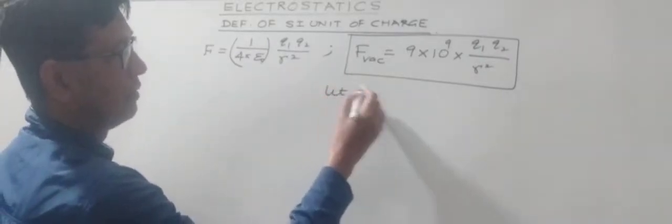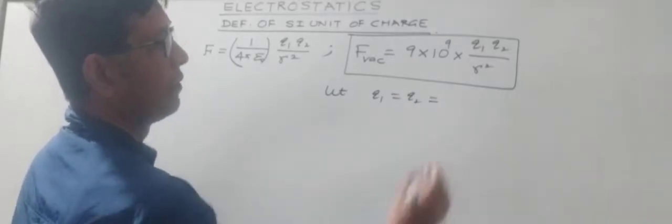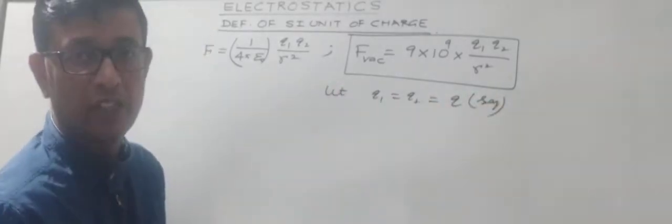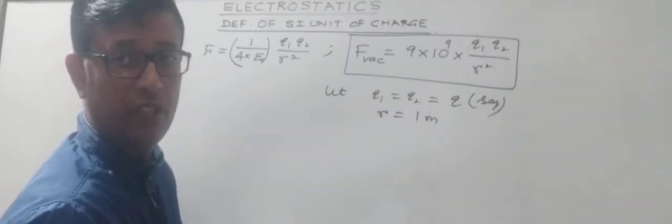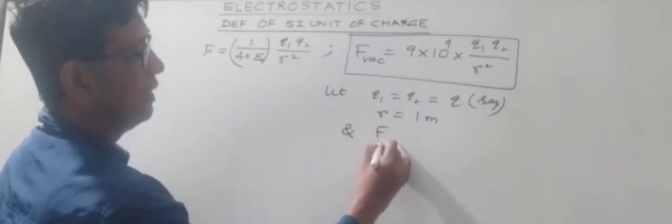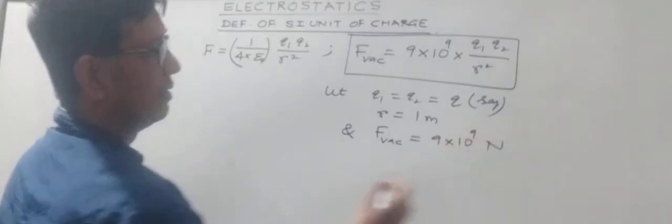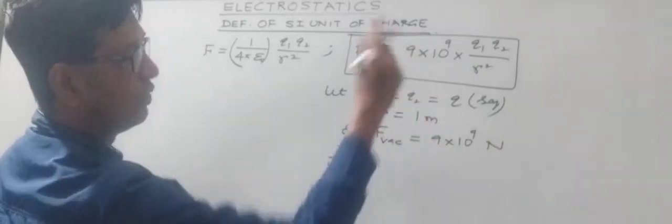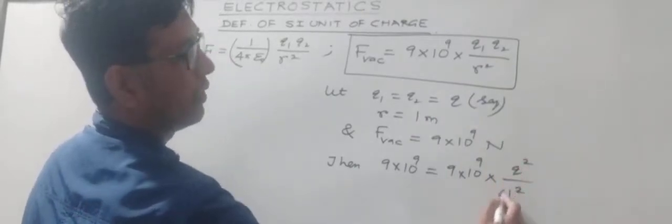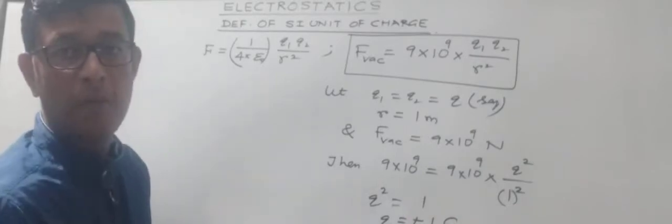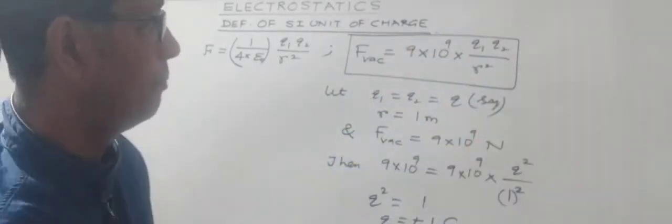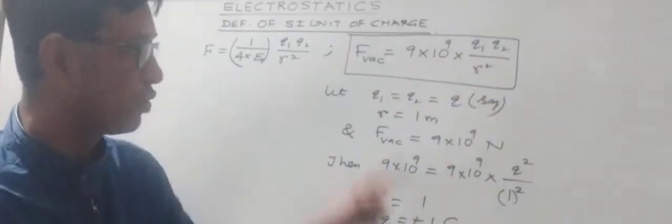Let q1 equals q2 equals q — both charges are of equal magnitude. Let the two equal charges be separated by a distance of 1 meter in air or vacuum, and let the force experienced between them be 9 into 10 to the power 9 Newton. Substituting all these values, q1 and q2 are both q, r squared is 1 squared, so q squared equals 1, giving q equals plus or minus 1. We use this expression to define 1 Coulomb.